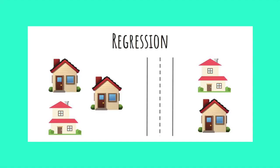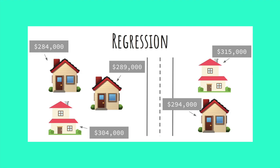Going back to our example used in previous videos of predicting house values, what would a regression output look like? Well, it would look exactly as you might expect — each house receives a prediction of how many dollars it is worth.